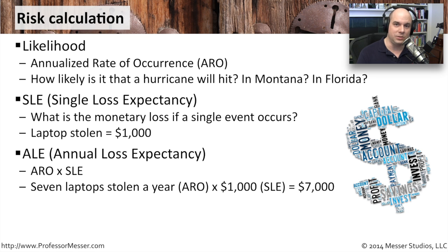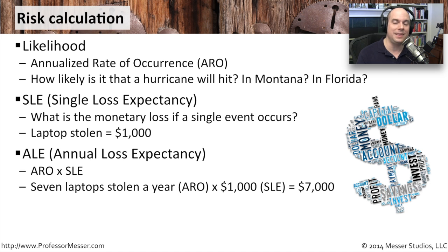We can start budgeting and planning for this. Maybe we want to get insurance on these laptops because we're spending a lot of money when people lose them. We need some type of mitigation that's not going to cost us $7,000 out of pocket every time. It might also help justify software or hardware to track laptops if they happen to be stolen or lost. Knowing that risk calculation number allows you to build the business case. If it costs $10,000 to get tracking software, that doesn't make sense — we're only losing $7,000 a year. So we can probably deal with that level of risk.